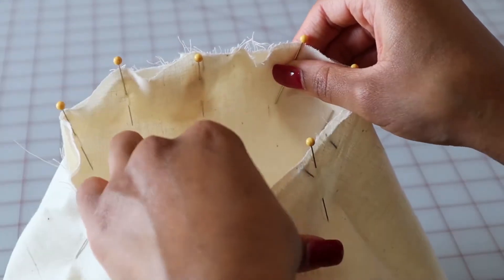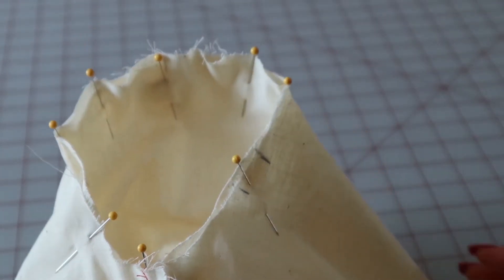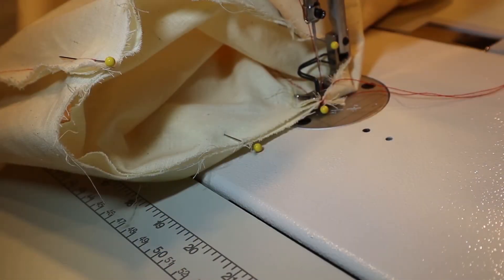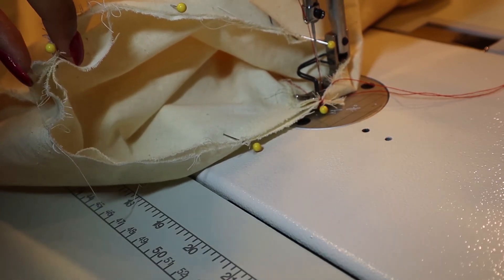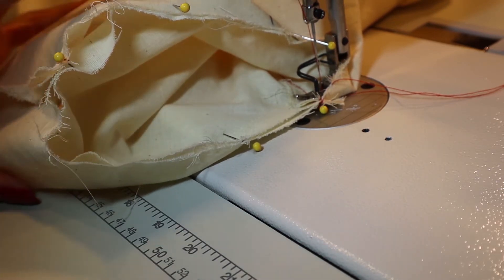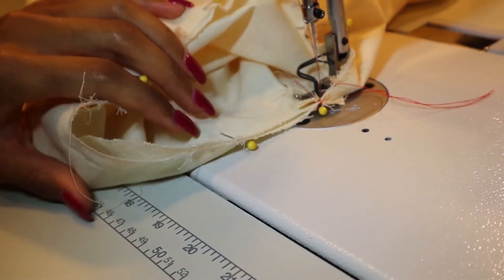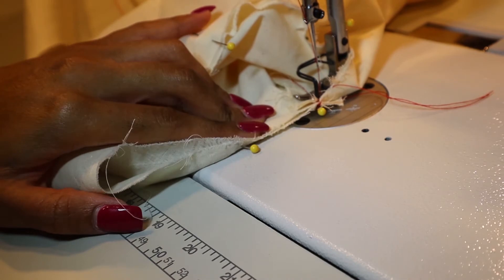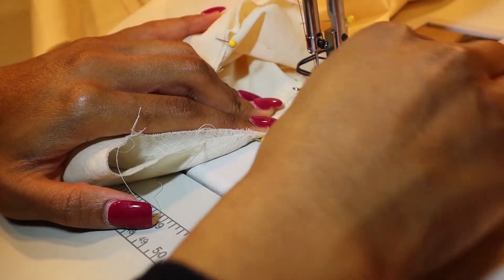So now you are ready to sew in your sleeve. Here we are on the sewing machine. I have the sleeve on top and the bodice armhole underneath on the bottom. I'm starting at the side seam when we first pinned the sleeve on. Of course, when you start sewing, backstitch. I'm using a half-inch seam allowance here.